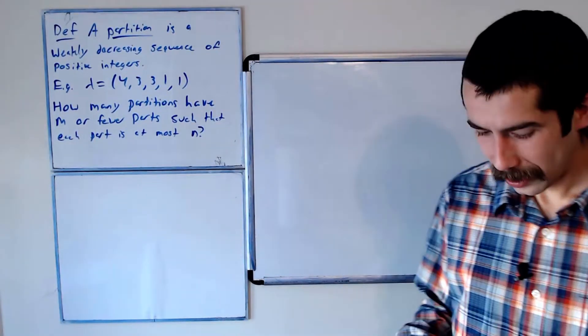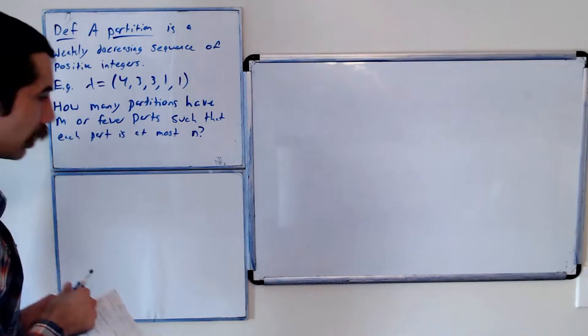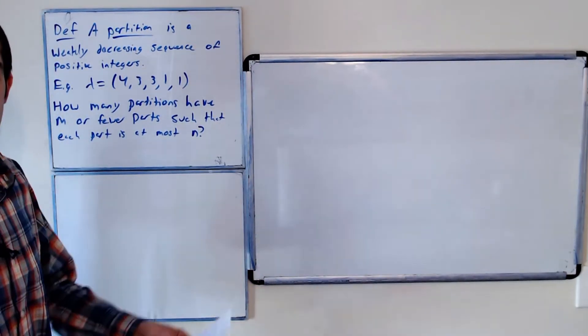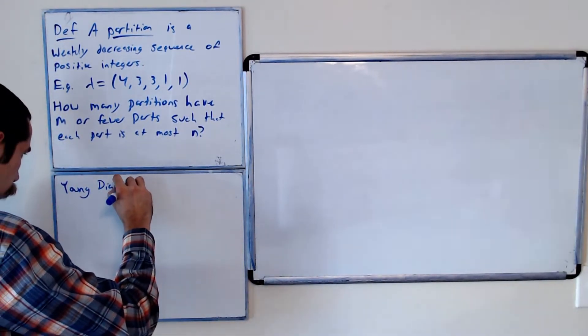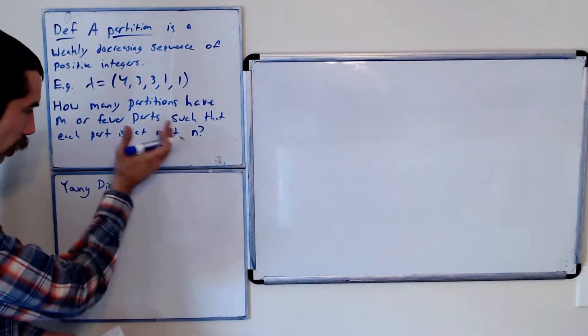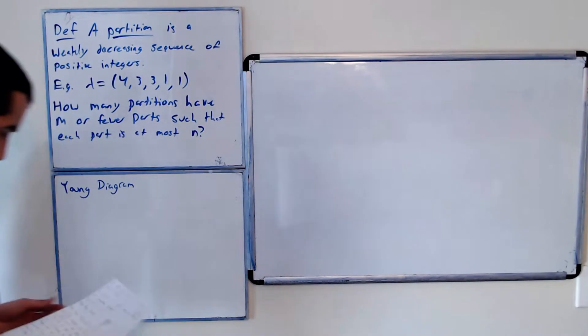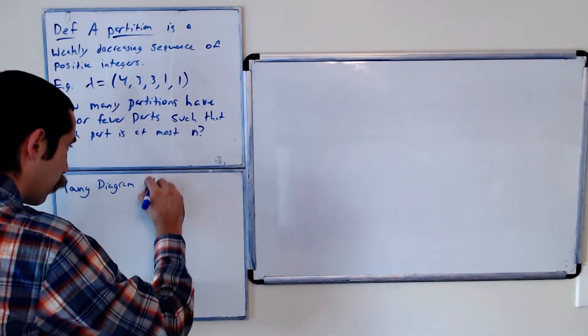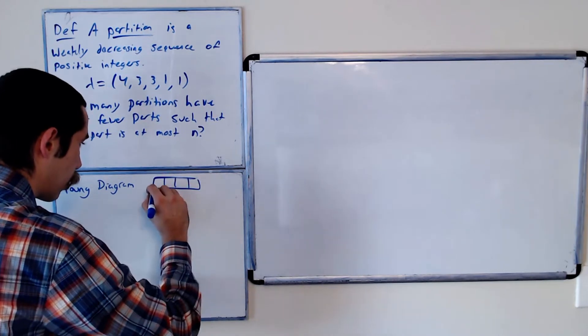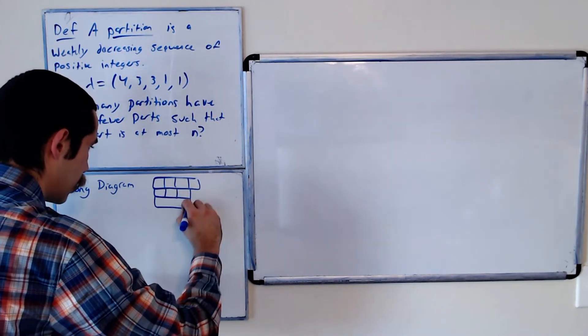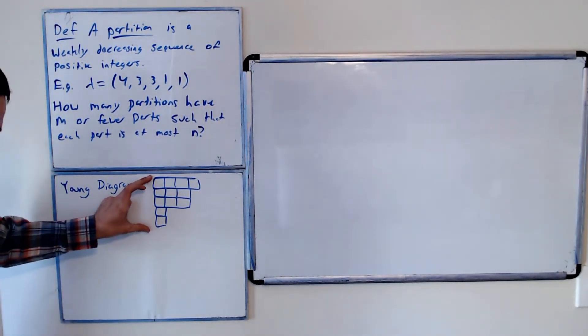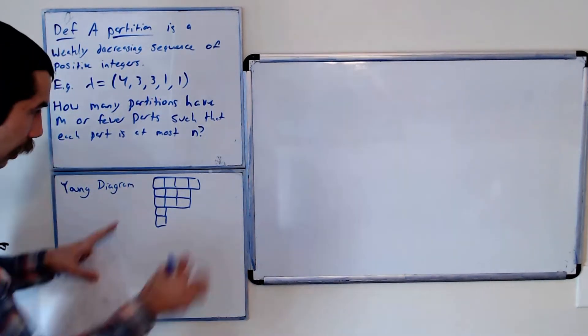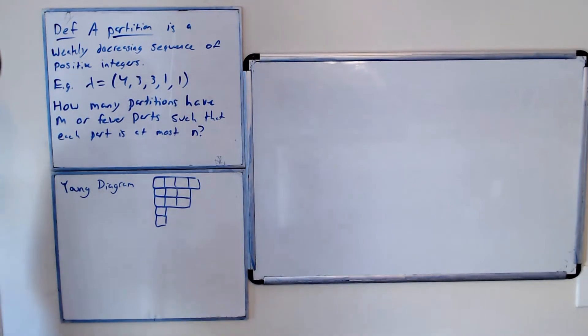Alright, welcome back. To each partition, you can assign what's known as a Young diagram. The Young diagram is a northwest-justified array of boxes. So the Young diagram for lambda would have 4 boxes, 3 boxes, 3 boxes, 1 box, and 1 box. Notice that this length here is the number of parts of lambda, and this length here is the length of its longest part.